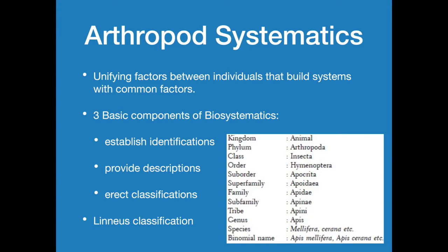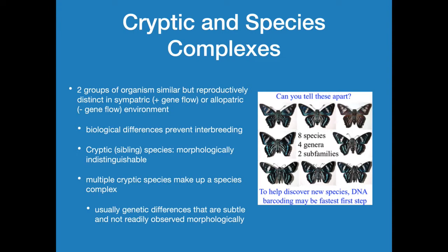Arthropod systematics — we just did a whole lecture on this. The basic components of biosystematics include identification, descriptions, and erecting classifications. We talked about the Linnaean classification system: kingdom, phylum, class, order, and so on. When we talk about different species, sometimes you may come across what's called a cryptic species or species complex. When we have two groups of organisms that are similar but reproductively distinct — they look like each other, structurally very similar, but are actually two different species so they can't mate. If they are in a sympatric environment, there may be some reproduction between them — that would be called sympatric and is a positive form of gene flow.